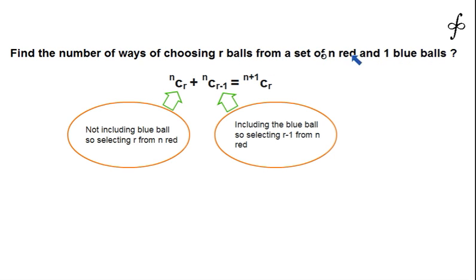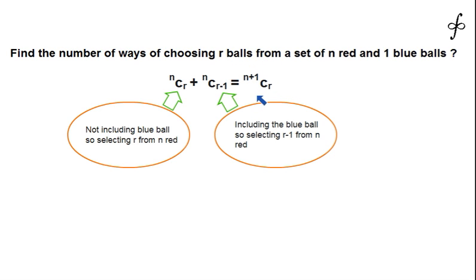There are n+1 balls in total — n red and 1 blue. Since all balls are distinct, selecting r balls from n+1 gives a straightforward answer of n+1Cr. However, we can break this problem into two cases, which will effectively prove the identity.